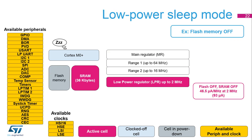In low-power sleep mode, the CPU clock is off and the logic is supplied by the low-power regulator. The system clock is up to 2 MHz. Flash memory can be configured in power-down and can be gated off. SRAM can be gated off. All peripherals can be active. The low-power sleep mode consumption is 46.5 microamps per MHz at 2 MHz with flash memory disabled.